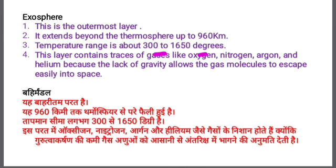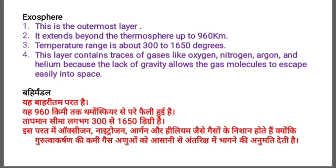The temperature range in the exosphere is about 300 to 1650 degrees centigrade, and our satellites are designed to bear this temperature. This layer contains traces of gases like oxygen, nitrogen, argon and helium, because the lack of gravity allows gas molecules to escape easily into space. As the effect of gravity is very low, these gas traces can reach here and stay for a long time.